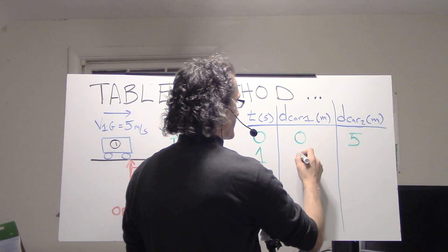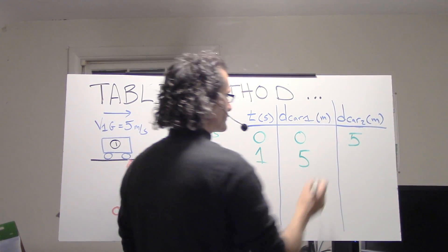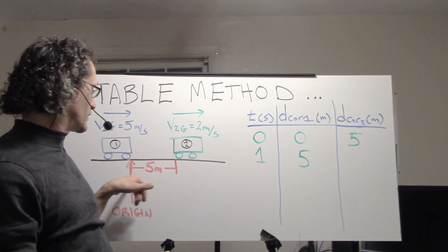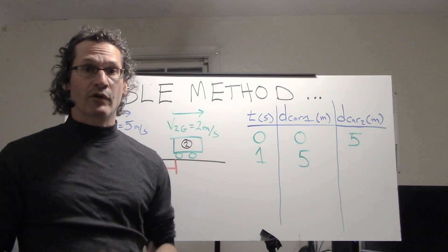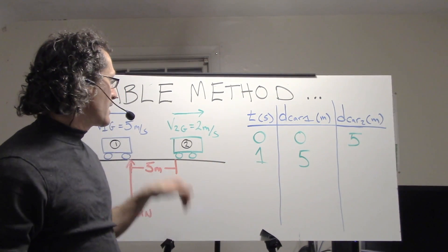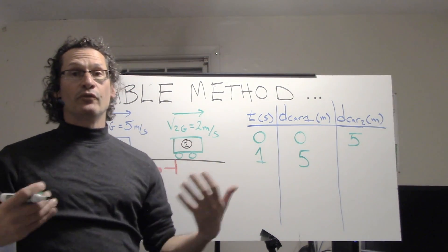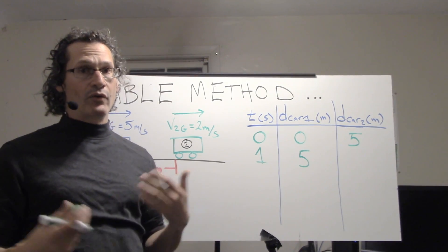So it's at position five relative to the origin. What about car two? Car two began at five meters, it's moving at two meters per second.